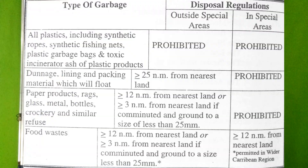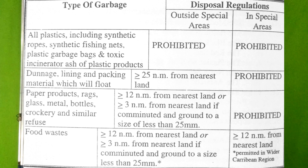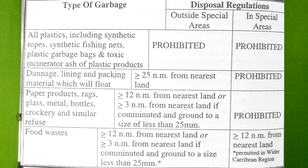Now let's discuss the discharge criteria under Annex 5. In the table you can see the type of garbage on one side and the disposal regulations for outside and inside special areas on the other. All plastics — including synthetic ropes, synthetic fishing nets, plastic garbage bags, and toxic incinerator ash from plastic products — are strictly prohibited both outside and inside special areas. Dunnage, lining, and packing materials that float are allowed to discharge more than 25 nautical miles from the nearest land, but are prohibited in special areas.